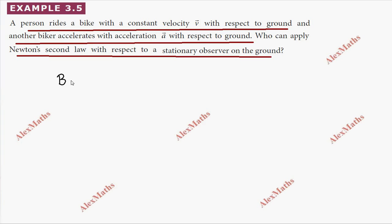Biker 1 has constant velocity v vector with respect to the ground. Biker 2 has acceleration a vector. Newton's second law applies only in inertial frames.